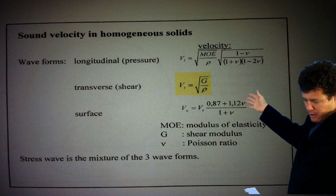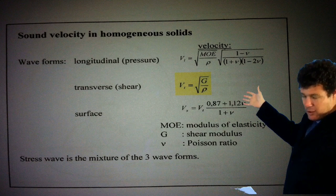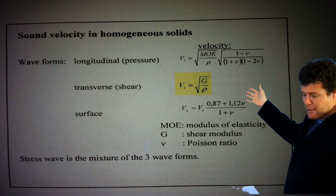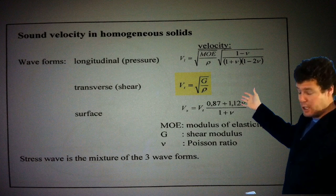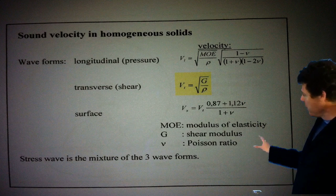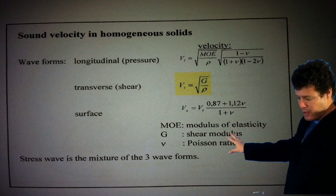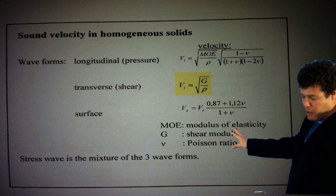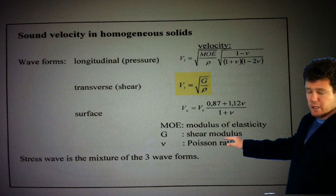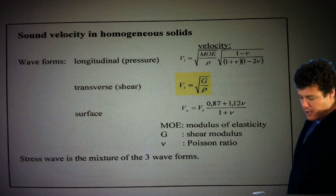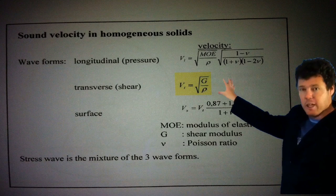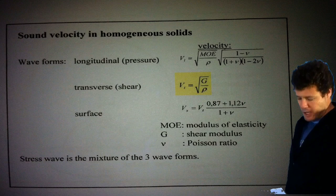The waveforms that travel through wood are longitudinal or pressure waves, transverse or shear waves, and surface waves. MOE stands for modulus of elasticity, G is the shear modulus, and V is the Poisson ratio, and all of those things appear in the equation.